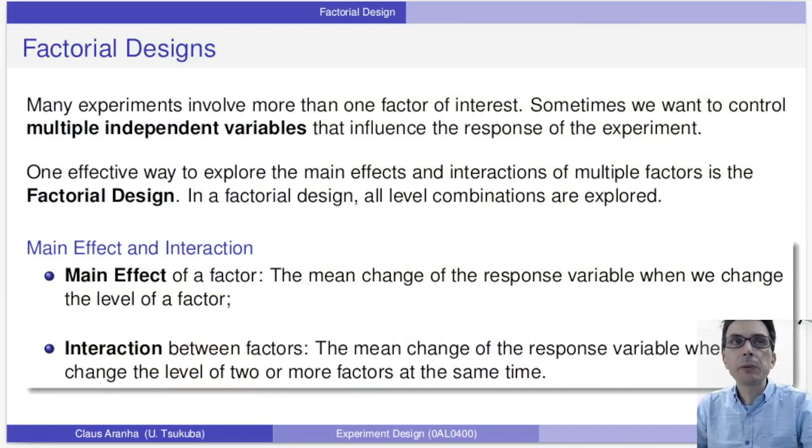Many experiments will involve more than one factor of interest. Sometimes we want to control multiple independent variables that influence the response of the experiment. One effective way to explore the main effects and interaction effects of multiple factors is the factorial design. In the factorial design we explore all combinations of factors and levels.